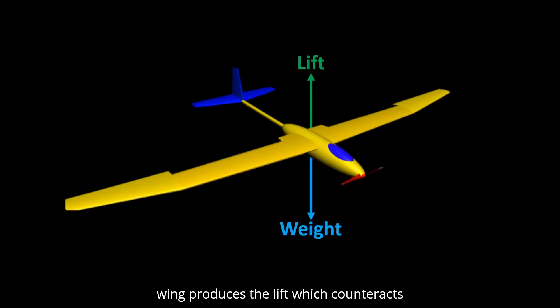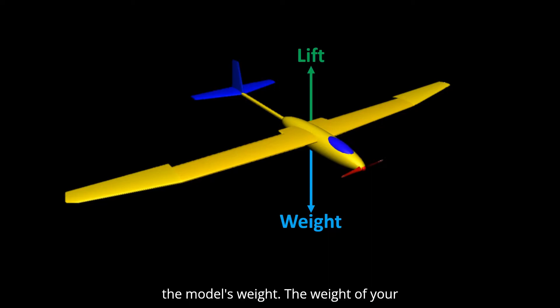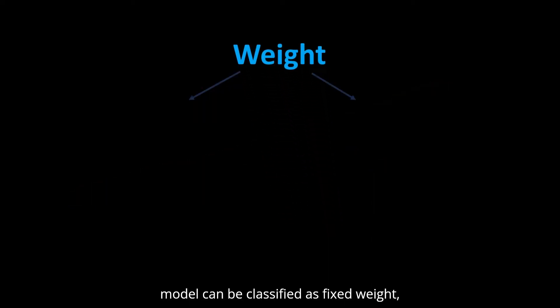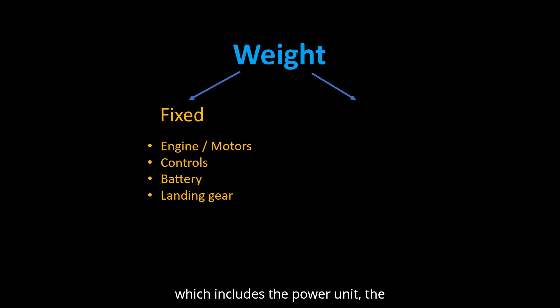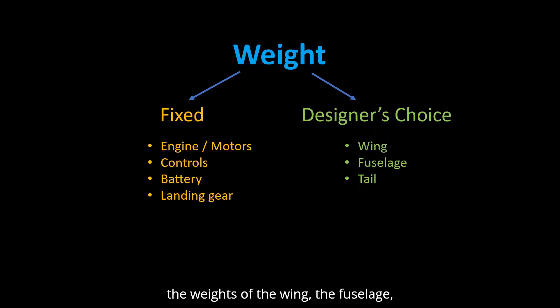The wing produces the lift which counteracts the model's weight. The weight of your model can be classified as fixed weight, which includes the power unit, the control unit, and other stuff like the landing gear. The other category includes the weights of the wing, the fuselage, the tail, etc. This type is flexible weight, meaning that this weight depends on the designer's choice.